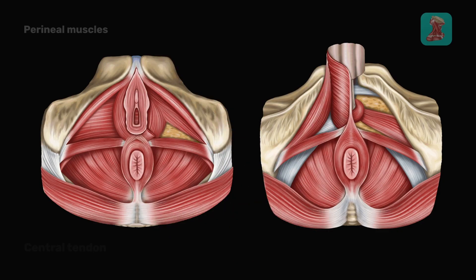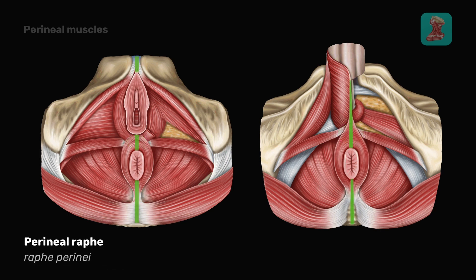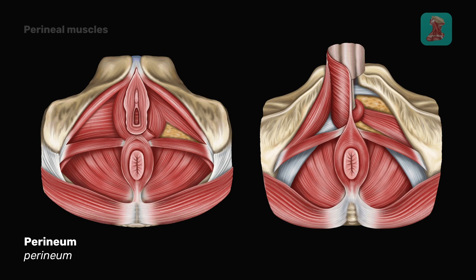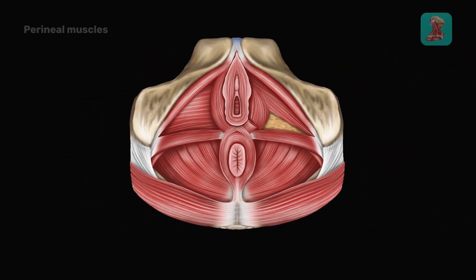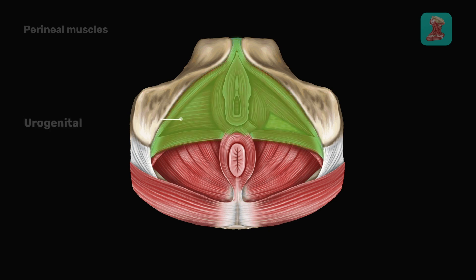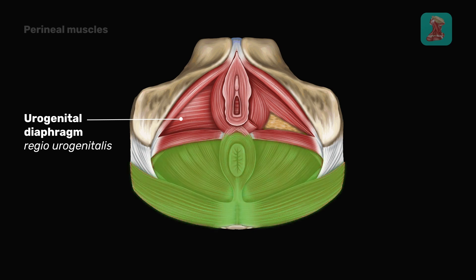In the center of the perineum, the so-called central tendon of the perineum is located. The median perineal raphe runs along the perineum in the anteroposterior direction. The perineum includes a fairly large number of muscles. The line connecting the ischial tuberosities divides the perineum into two important zones: the urogenital diaphragm and the pelvic diaphragm, or the anal triangle.